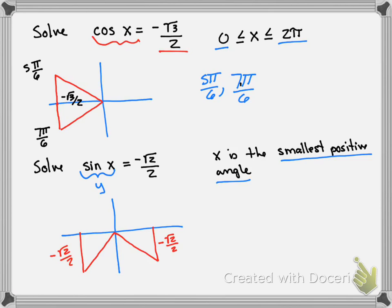These two angles, if this is pi over 4, then this is 3 pi over 4, making this 5 pi over 4 and 7 pi over 4.